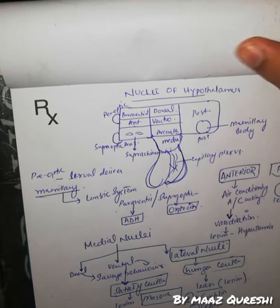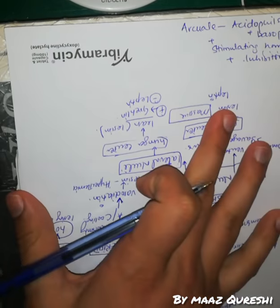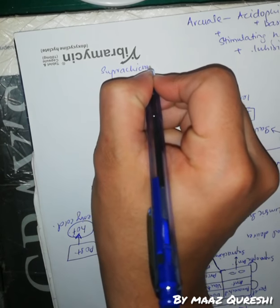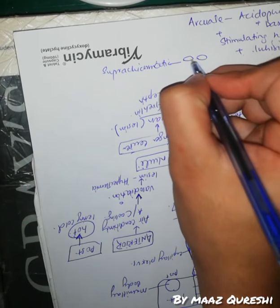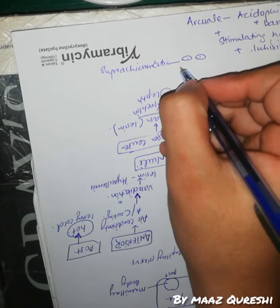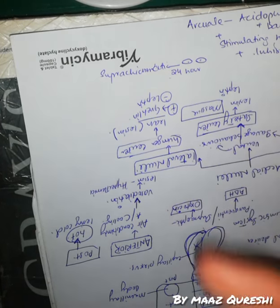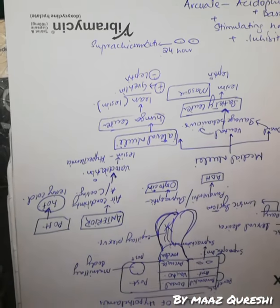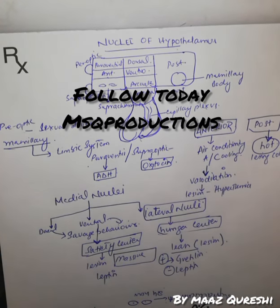The pituitary is just the size of a pea. Now the suprachiasmatic nucleus — the suprachiasmatic nucleus is related to the circadian rhythm, controlling the 24-hour sleep-wake cycle. These are the nuclei of the hypothalamus: very easy and very high yield — give them a good look.